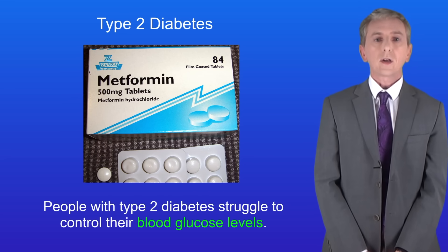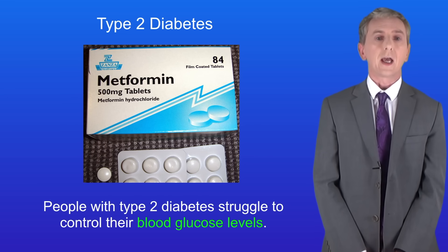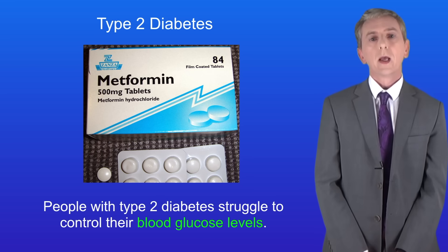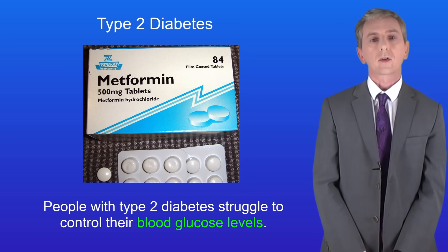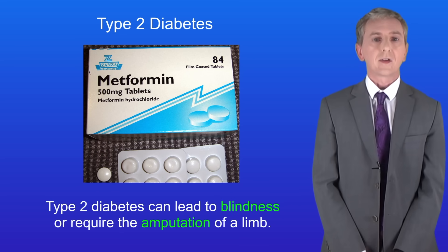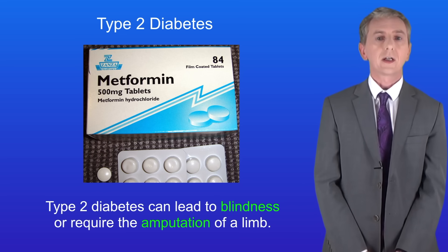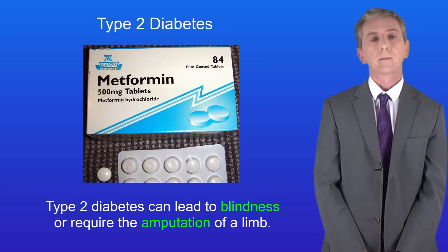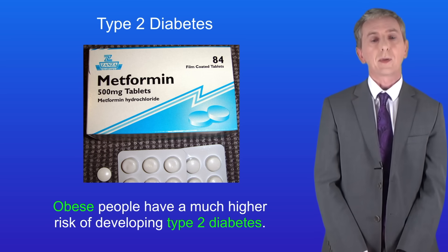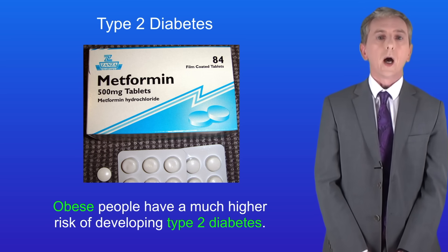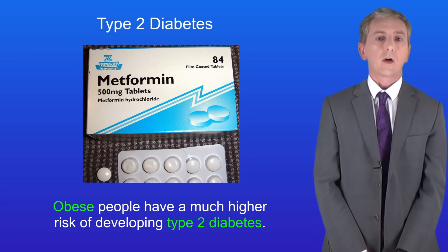One condition which is rapidly increasing in the UK is type 2 diabetes. People with this condition struggle to control their blood glucose levels, and it is a very serious condition which can lead to blindness or require the amputation of a limb. A major risk factor for type 2 diabetes is obesity — obese people have a much higher risk of developing the condition.